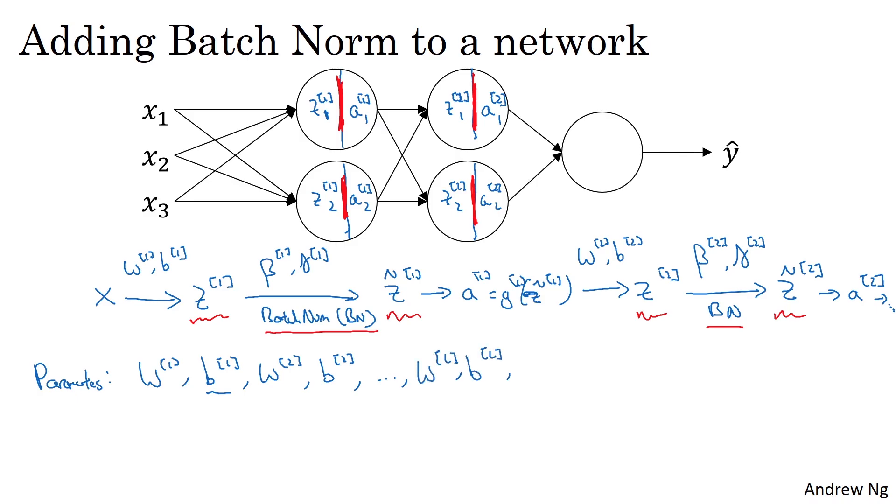We've added to this neural network additional parameters: beta1, gamma1, beta2, gamma2, and so on, for each layer in which you are applying batch norm. For clarity, note that these betas here have nothing to do with the hyperparameter beta that we had for momentum or for computing the various exponentially weighted averages.